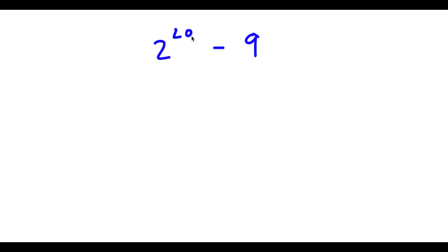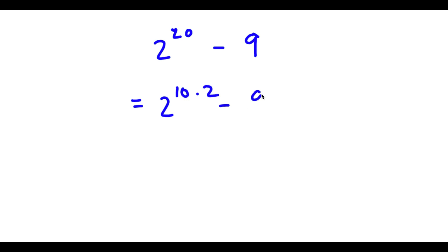Alright, so I have 2 to the power of 20 minus 9. So I have 2 to the power of 20. This is the same thing as 2 to the power of 10 times 2, because 10 times 2 is 20.